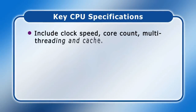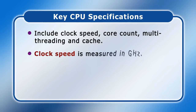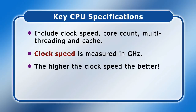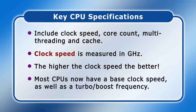Key CPU specifications include clock speed, core count, multi-threading, and cache. Clock speed is measured in gigahertz and the higher the value, the more instructions a CPU can execute per second. Today, most CPUs have both a base clock speed, as well as a turbo or boost frequency which they can operate at if they remain within safe temperature and power limits.